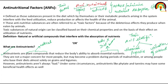They are not a major concern for most people. But they may become a problem during periods of malnutrition or among people who base their diet almost solely on grains and legumes — especially individuals who already have a deficiency of vitamins and minerals. However, anti-nutrients are not always bad. Under some circumstances, anti-nutrients like phytate and tannin may also have some beneficial health effects.